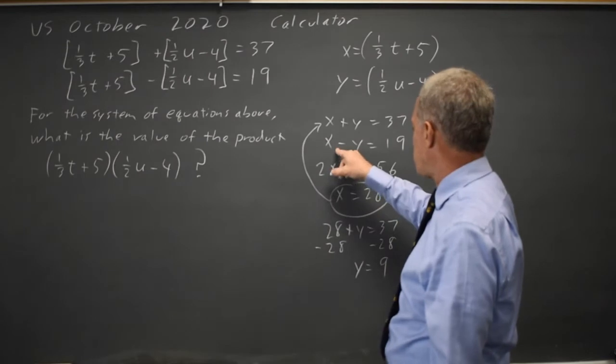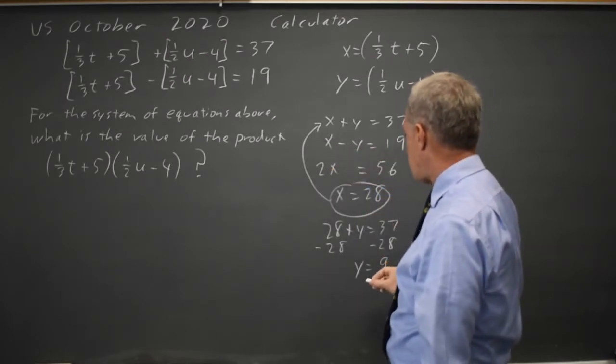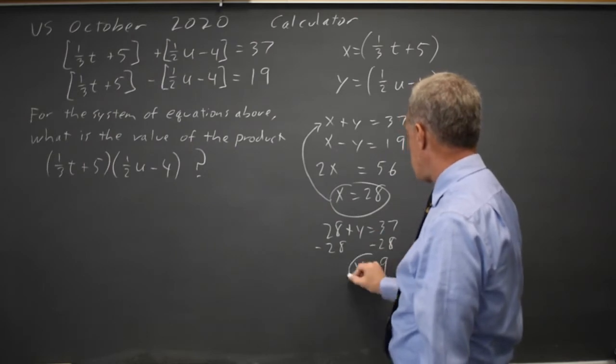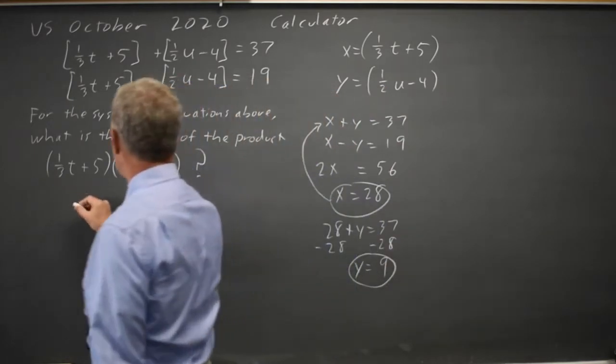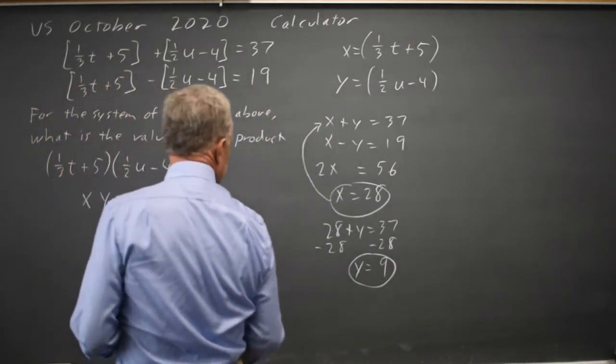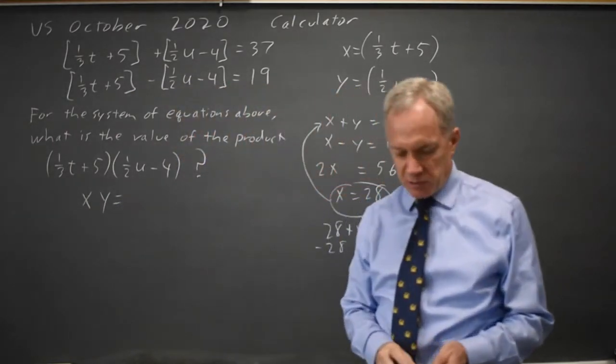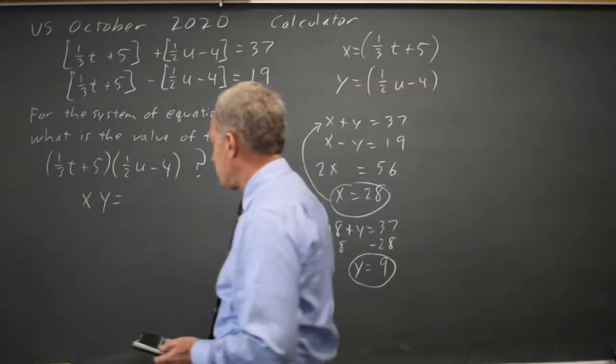Let's try that in the second equation. 28 minus 9 is 19, so I have the correct values of x and y. And what they're asking for is x times y, which is 9 times 28, and I'm going to my calculator for that. And I get 252.